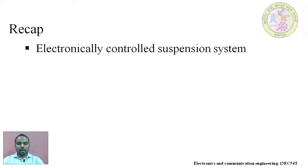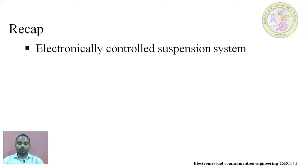The ECU generates output and gives it to the actuators and air compressor. We know that an actuator is a device which creates motion. In the previous session we also discussed how the suspension system works in different situations, like when cornering or turning the vehicle, and how various sensors are involved in controlling the damping of the suspension.